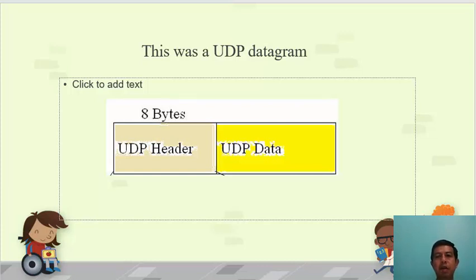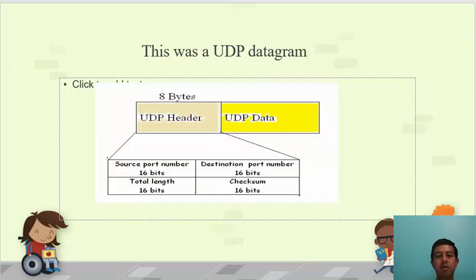Let's go back to UDP for a moment. UDP takes data from the application layer, inserts a header — specifically 8 bytes — and then sends the packet or datagram to the network layer. UDP inserts four types of information in each header: the source port number, the destination port number, the total length, and the checksum.